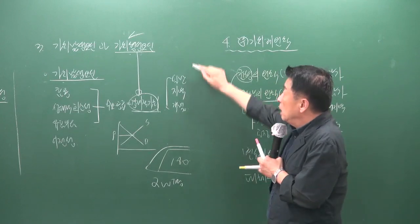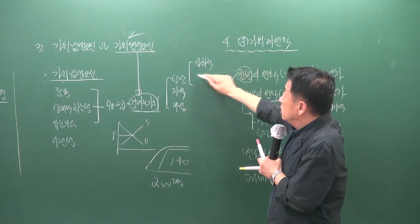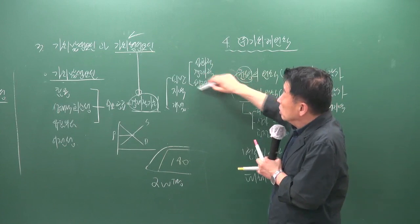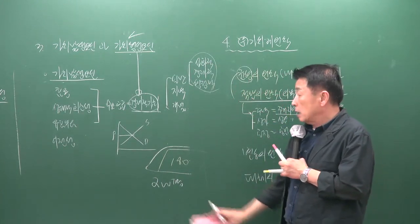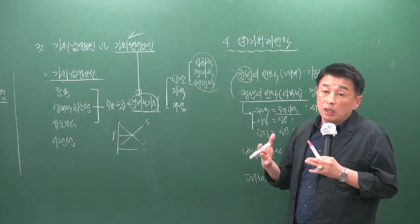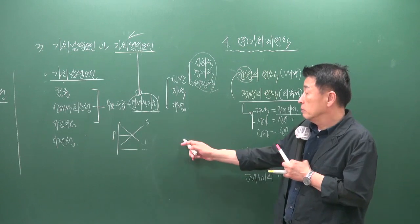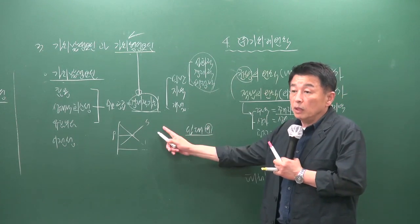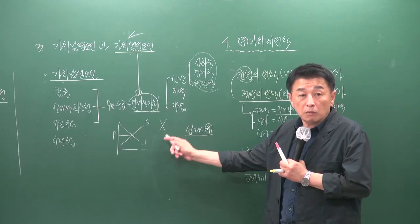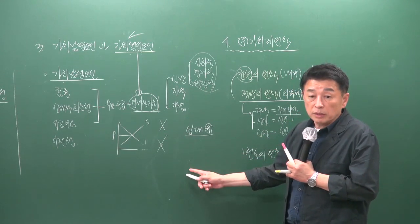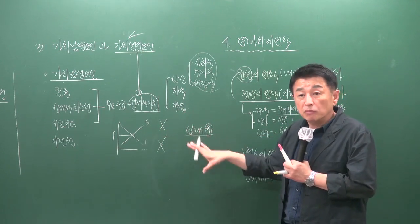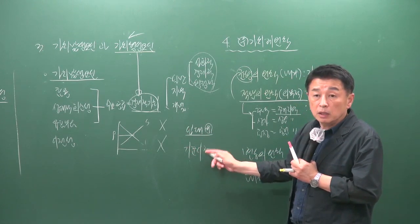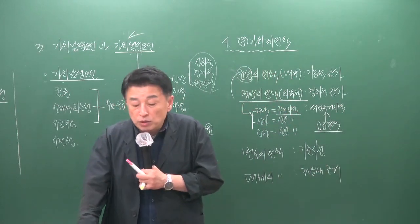가치형성 요인이 계속 변하기 때문에 같은 물건이라도 시점에 따라 가치는 달라질 수 있습니다. 예를 들어 임대부동산 주변의 대학이 폐교되거나 공장이 폐쇄되면 수요가 줄어 가치 차이가 발생합니다. 같은 부동산이라도 기준 시점에 따라 가치가 달라질 수 있다는 것을 판단하는 것이 변동의 원칙입니다.